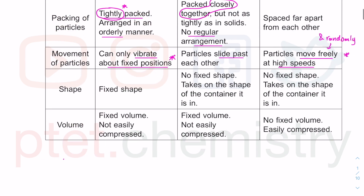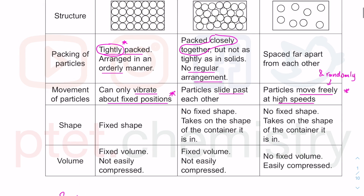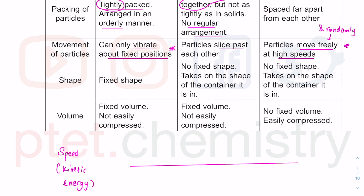Speed is related to kinetic energy — you would have learned this in physics or lower secondary science. If you travel faster, you have greater kinetic energy; if you move slowly, you have lesser kinetic energy. In terms of movement from solid to liquid to gas, solid particles move really slowly because they only vibrate about fixed positions. Going from solid to liquid to gas, particles travel at greater speed, and therefore their kinetic energy also increases.